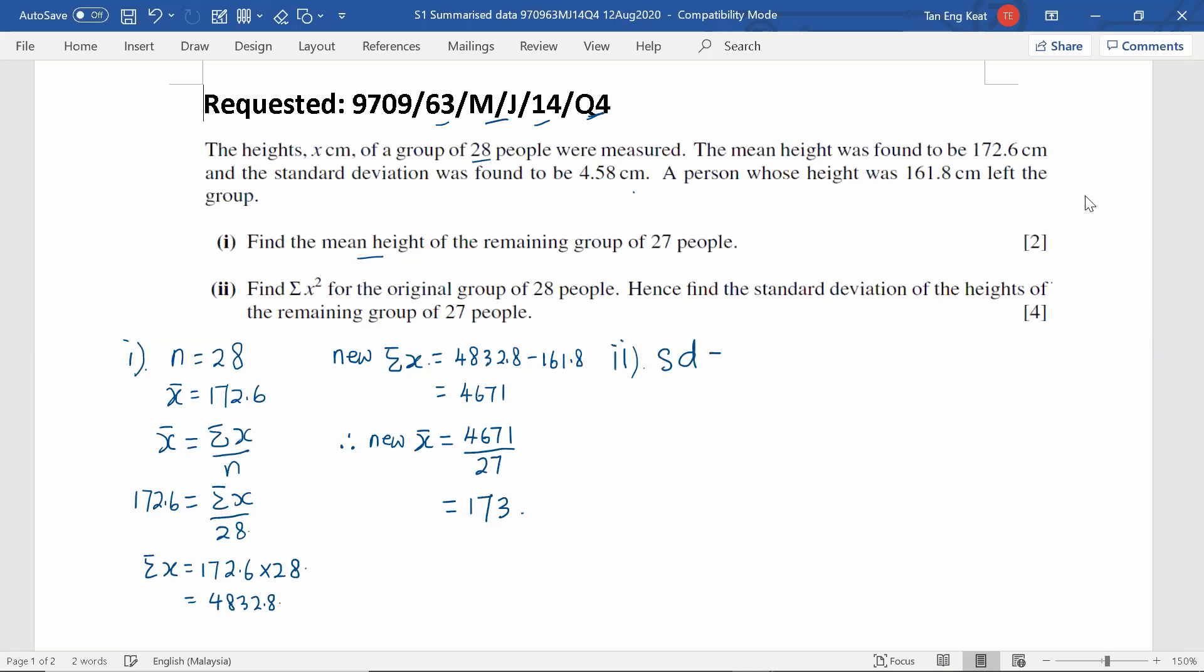So, SD standard deviation equals to square root sigma X squared divided by n minus out the mean X bar squared. So let me put it on the left-hand side. Sigma X squared is what we need to figure out.